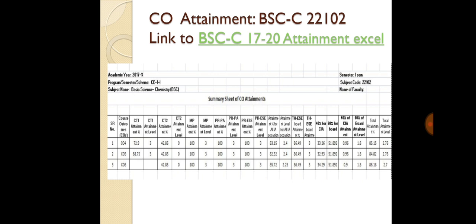In this way, for each CO — CO4, CO5, CO6 — we can write down the total attainment level.